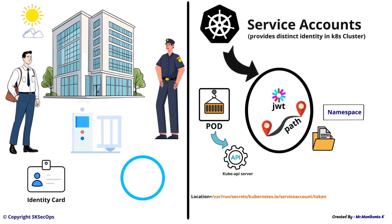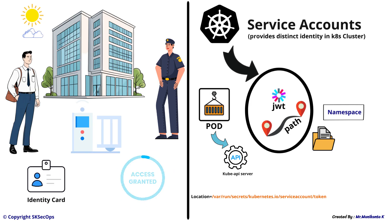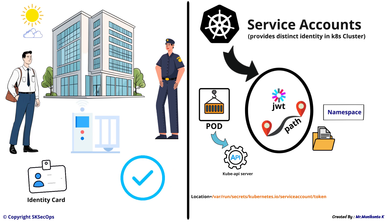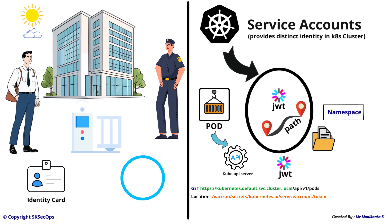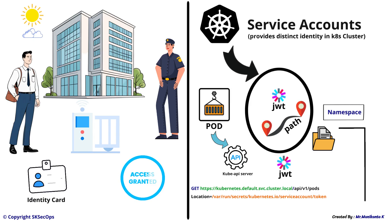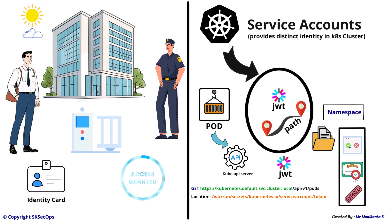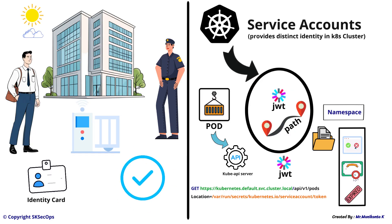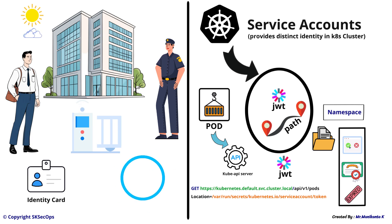The pod reads the token file and includes it in the HTTP header as a bearer token, then sends a request to the Kubernetes API server at the specified endpoint. The API server receives the request and extracts the token. With the help of this token, the API server validates it by checking: is it a valid JWT or not? Is it signed by Kubernetes or not? Has it expired or not? The API server then identifies the service account using this token. Up to here, we have completed the authentication or identity stage.